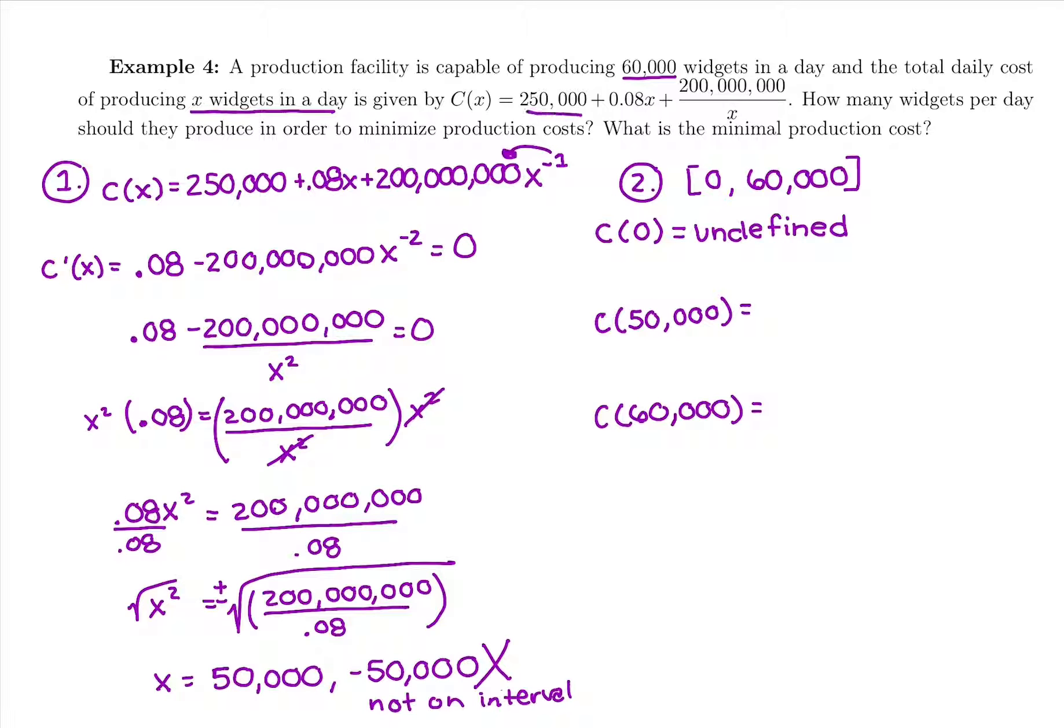Now I'm going to take 50,000 and plug it into the original function: 250,000, that fixed overhead cost they must have, plus 0.08 times 50,000, plus in parentheses 200 million divided by x in my calculator, and I'm getting $258,000. Compared to if I replace the x with 60,000, remember to put that fraction in parentheses on your calculator, and the total cost for that day would be $258,133.33. It's money, so I'm going to round to the nearest penny. You always stop at the second decimal place with money.